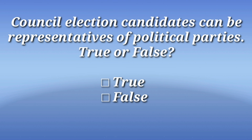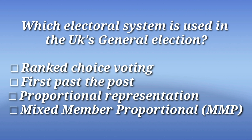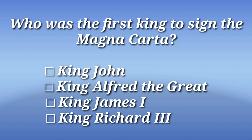Council election candidates can be representatives of political parties — true or false? It's true. When was the National Trust founded by volunteers? The correct answer is 1895. Which electoral system is used in the UK general election? The correct answer is first past the post.